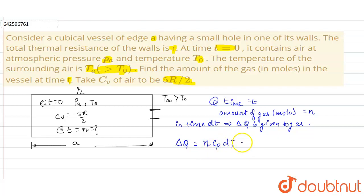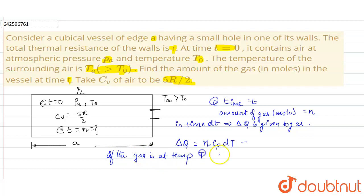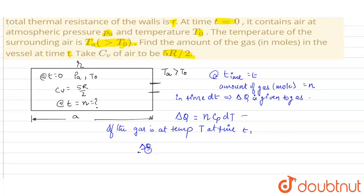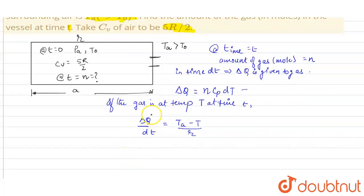If the temperature of the gas is capital T at time small t, then δQ/dt will be (Ta - T) divided by the total thermal resistance r. This is the heat current. Now putting the value of δQ as n·Cp·dT upon dt, we get: n·Cp·dT/dt = (Ta - T)/r.